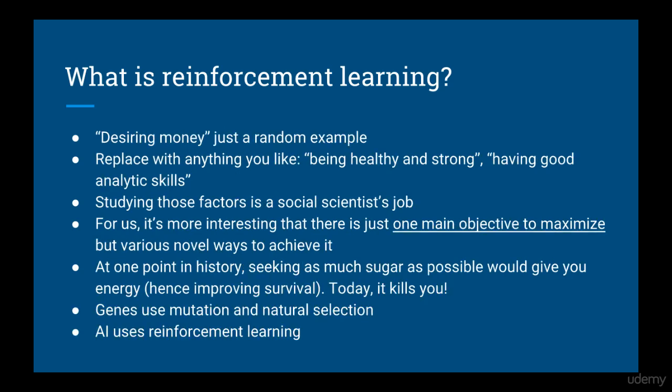Desiring and successfully earning money is just a random example — you can replace that with any trait you want, like being healthy and strong or having strong analytical skills. Knowing the exact factors is a social scientist's job. We are just interested in the fact that there is only one main goal we want to maximize and various novel ways of achieving it. These things are always fluctuating in time. At one point in history, seeking as much sugar as possible would give you energy and help you survive. Today we keep that trait since evolution is slow, but in today's world that trait would actually kill us. Our genes' method of maximizing their reward is through mutation and natural selection, which is slow, but an AI's method of maximizing its reward is reinforcement learning, which is fast.